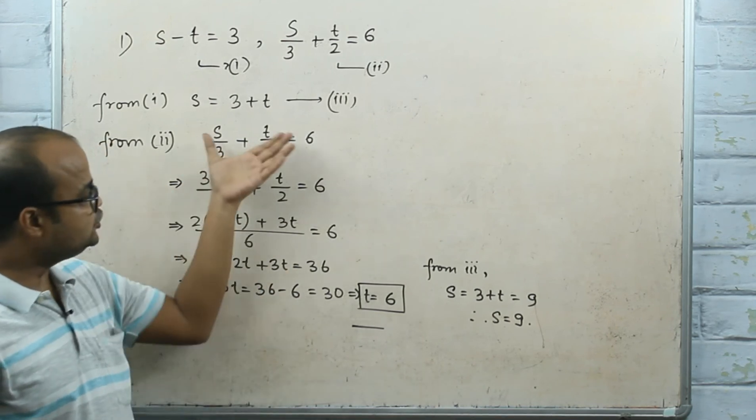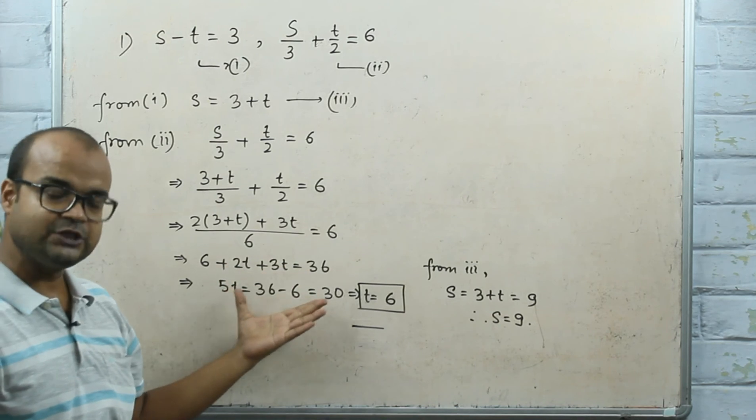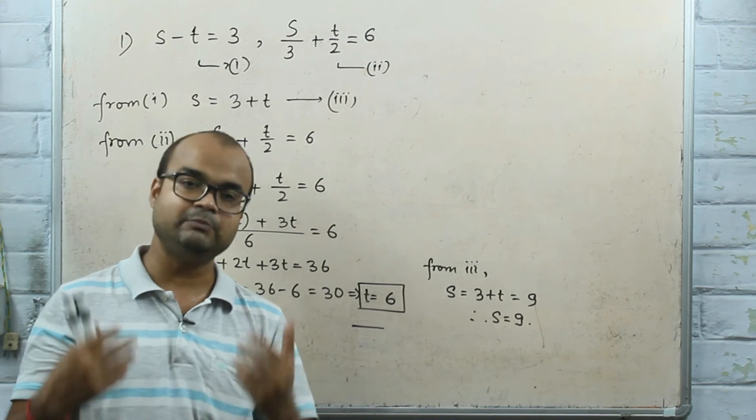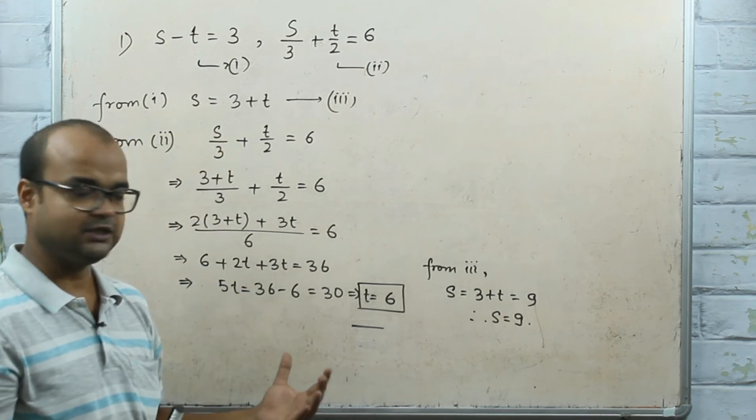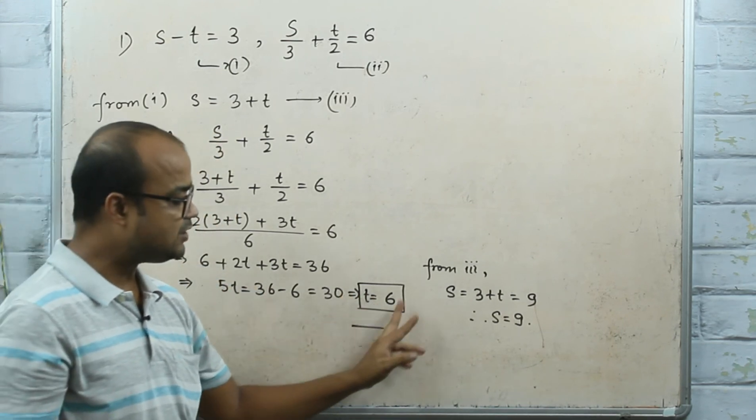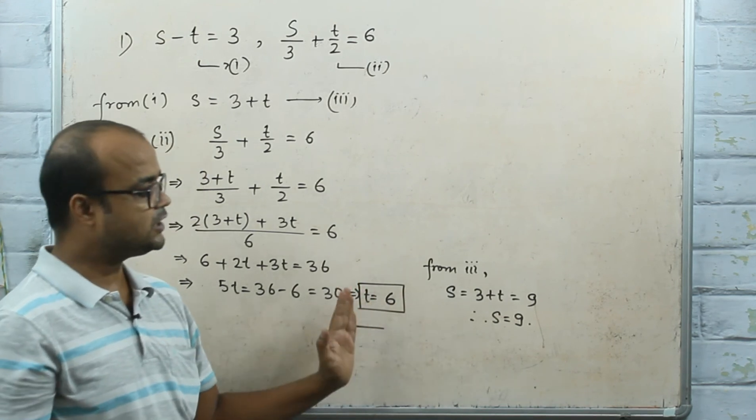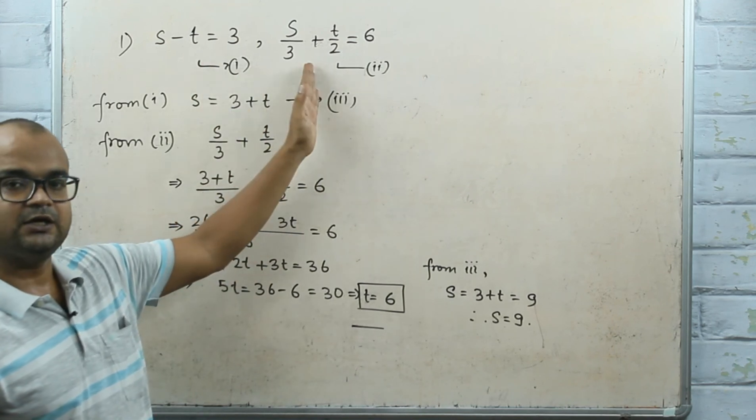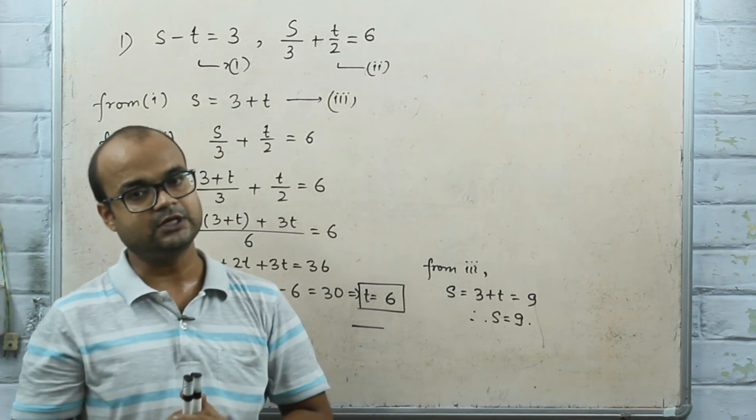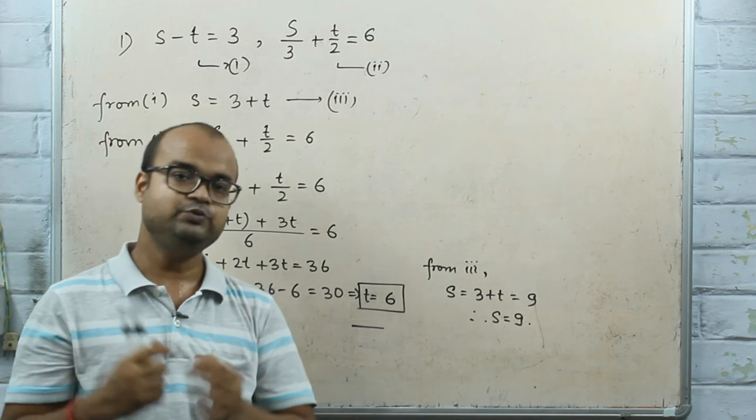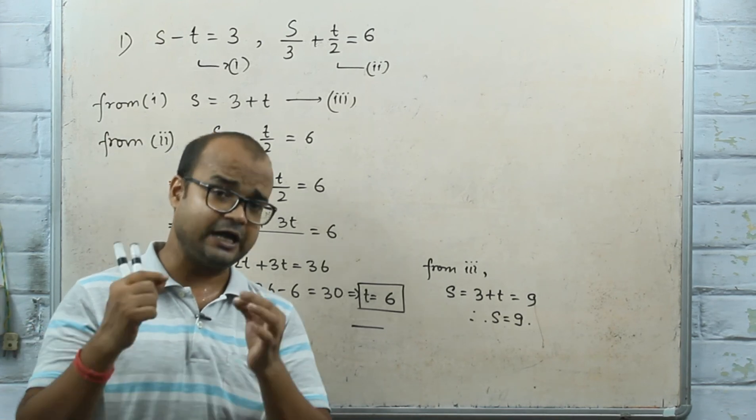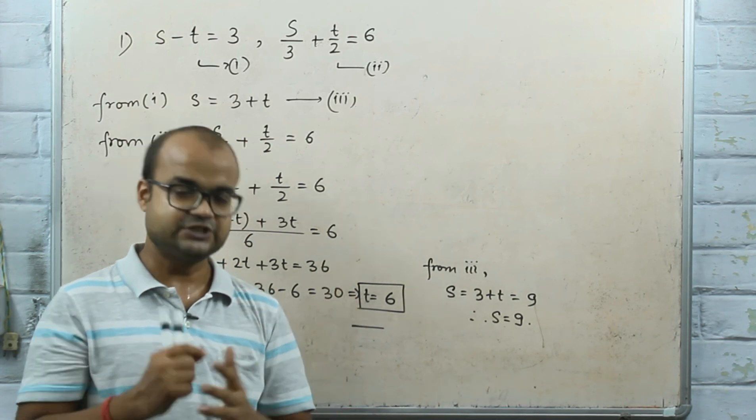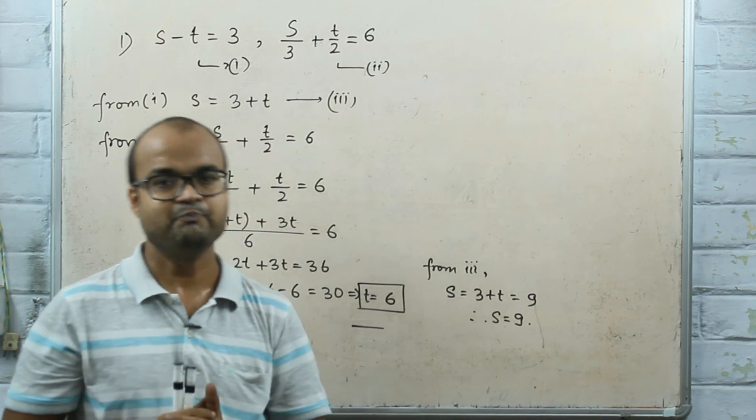That will reduce to a single variable linear equation in one variable, as we learned in class 8 and previous classes. Once the variable value is obtained, substitute that value in any one equation to find the other variable's value. Hope you understand this process. In the next part, I am going to solve some more problems based on substitution method. Till then, see you, bye.